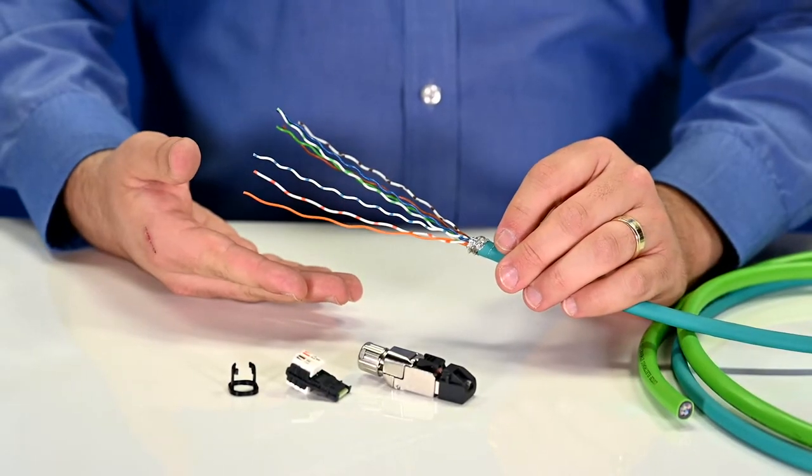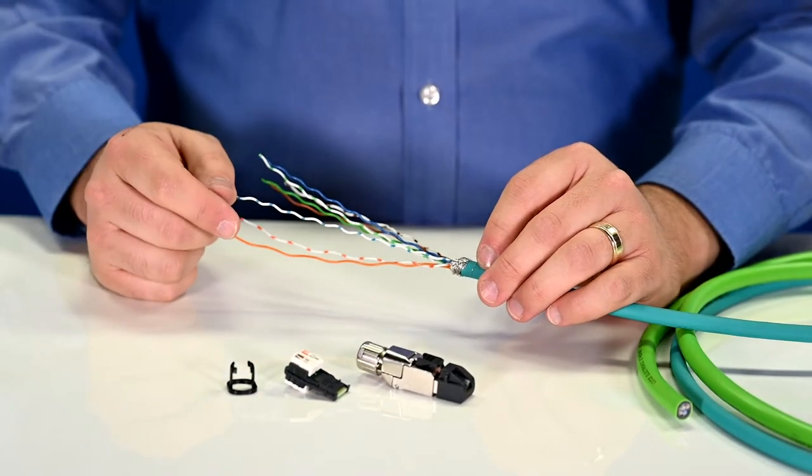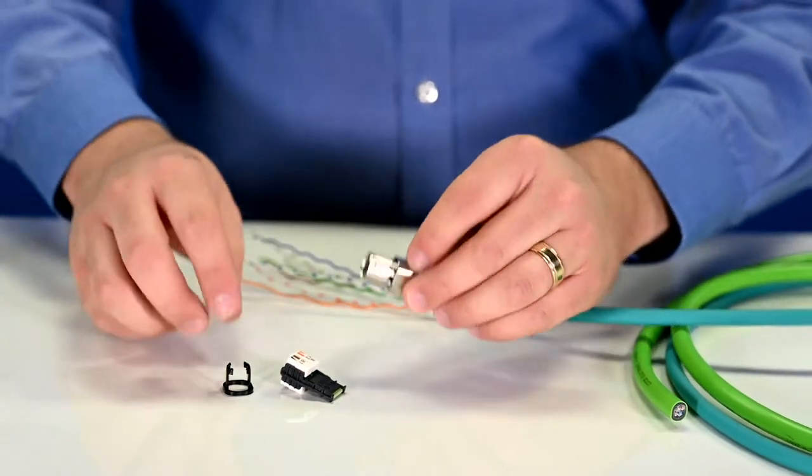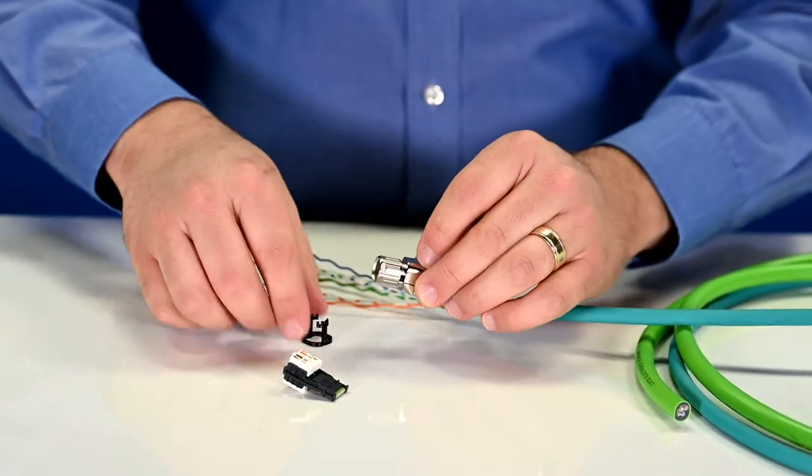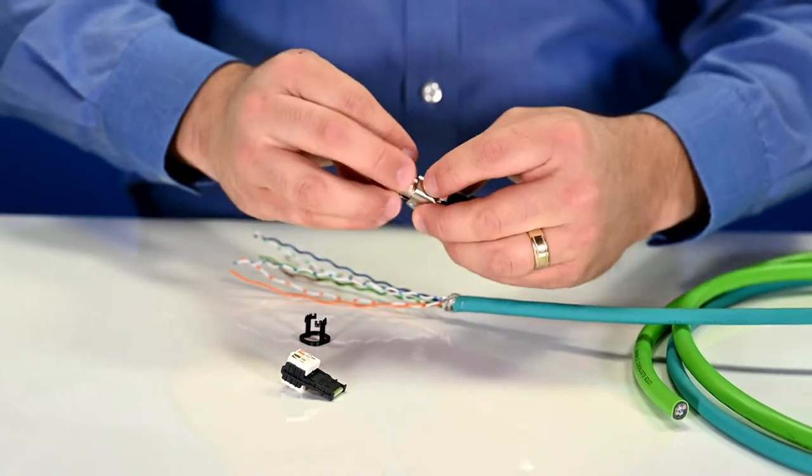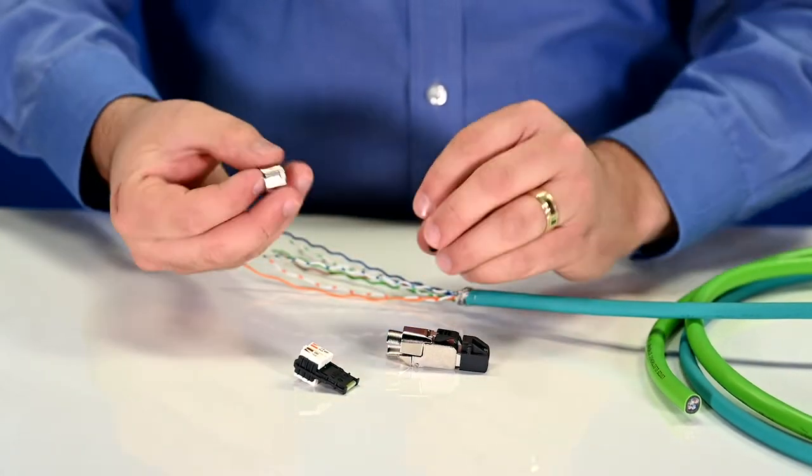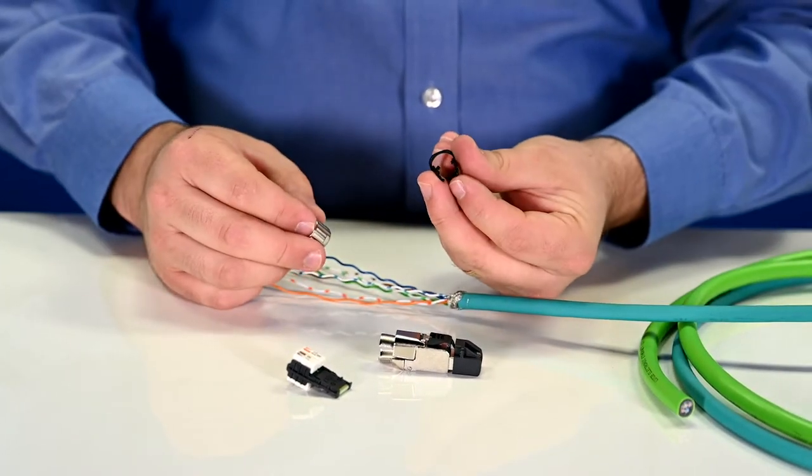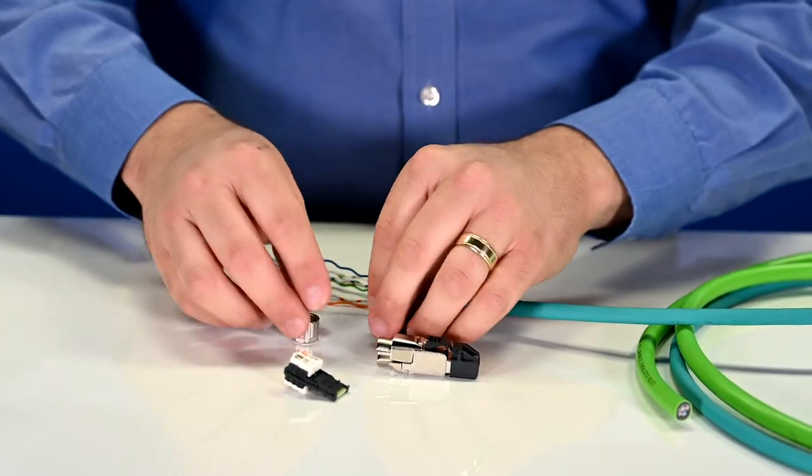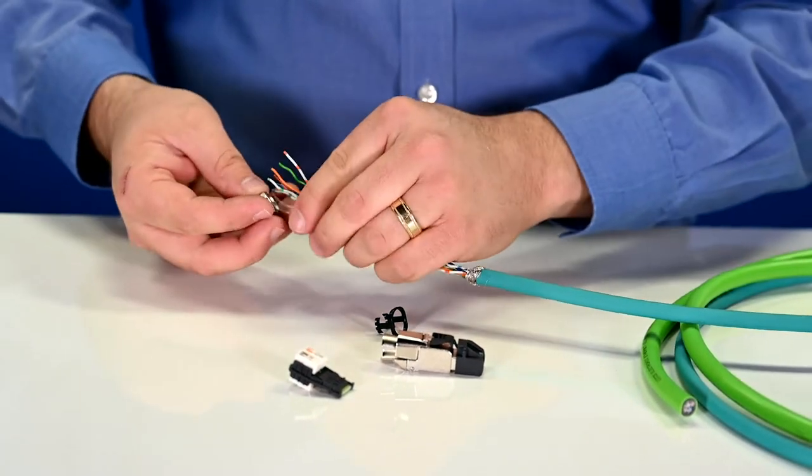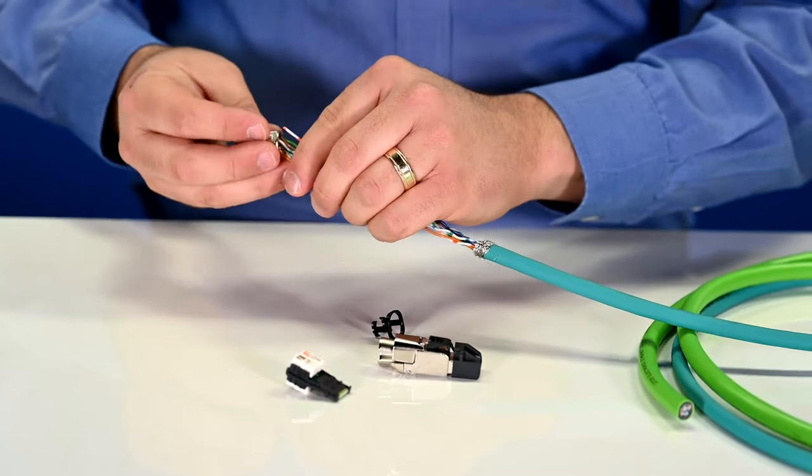Now that we have our cable prepared, we're ready to install our connector. The first step is to install our clamping ring, and you can do this before or after you strip the jacket, but it's two pieces. We have this nut, and we have this strain relief. So we want to take these and just slide them all onto the cable.